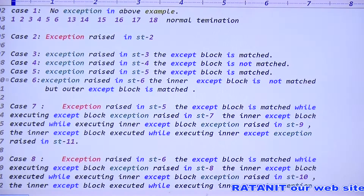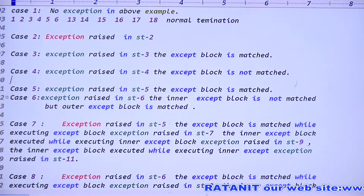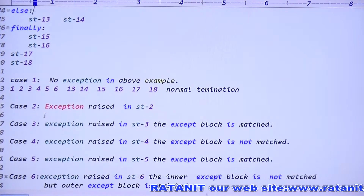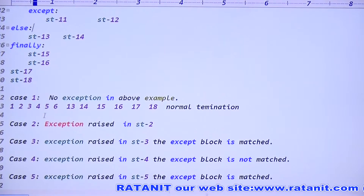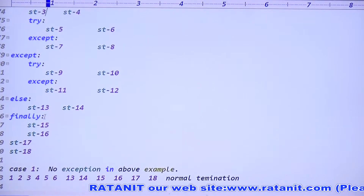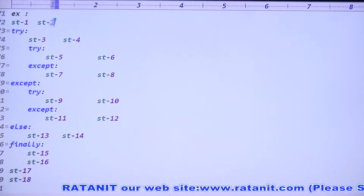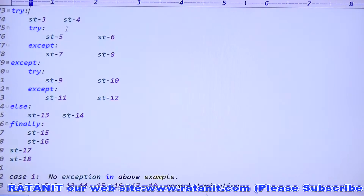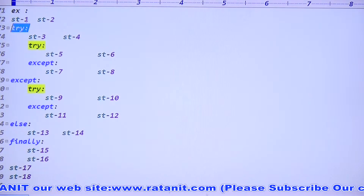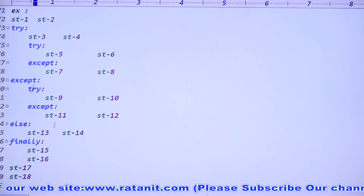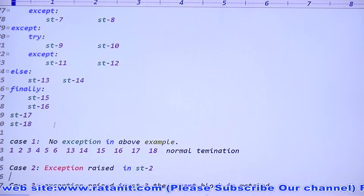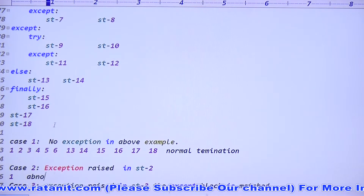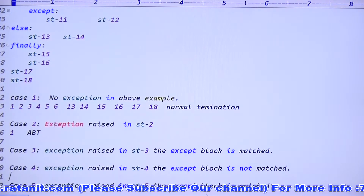Statement two exception: control is not entered in the try block, so only statement one is executed then abnormal termination. The finally block is only executed when control has entered the try block. Statement one is executed - just one - then abnormal termination. Case three: exception raised in statement three, catch block is matched.